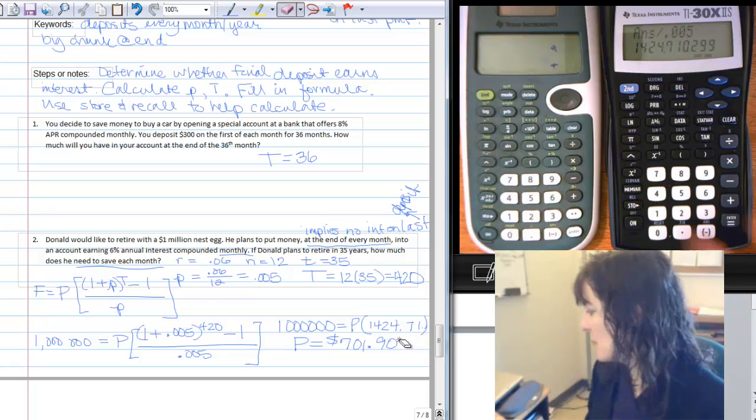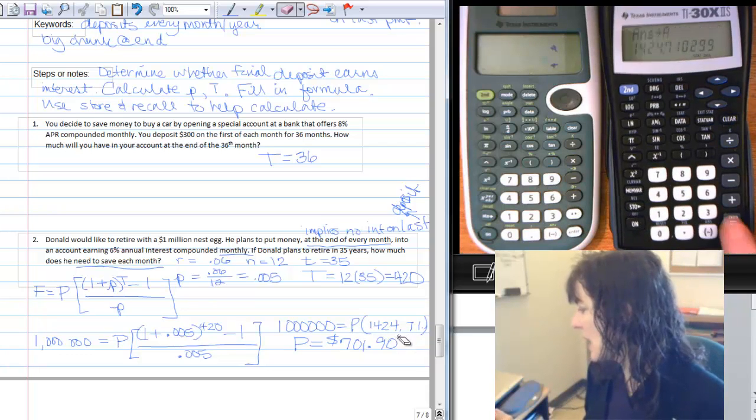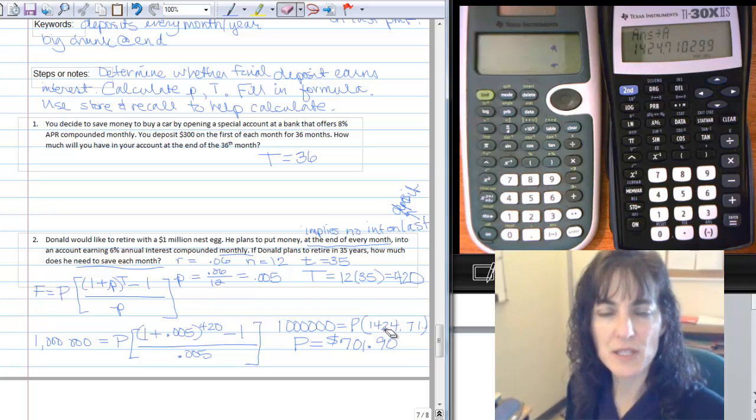I'm going to store this time. So I'm going to store that in A and I just push enter so it says it's stored in A, and now I'm going to do this division.